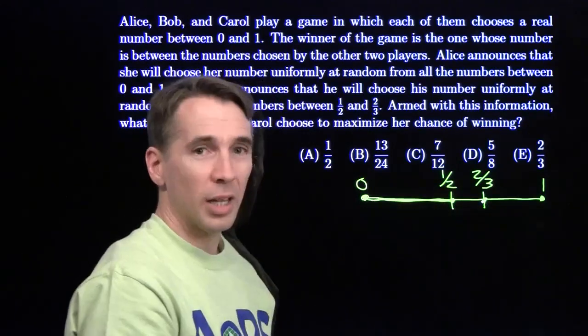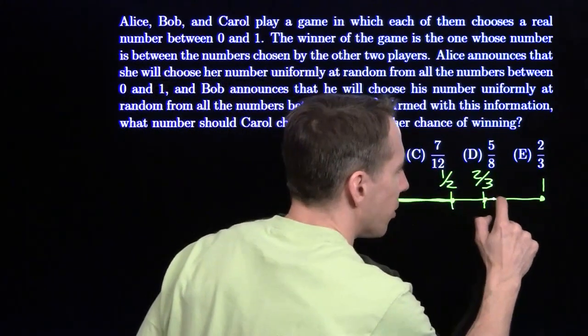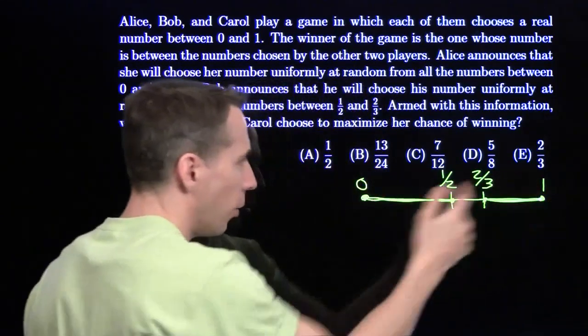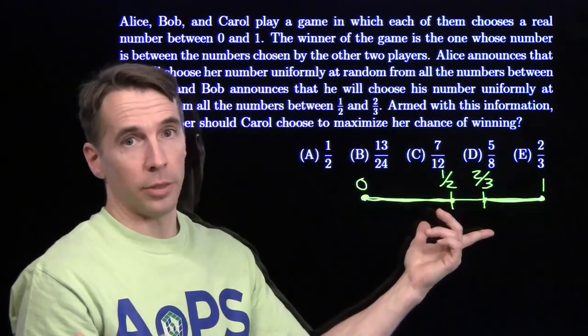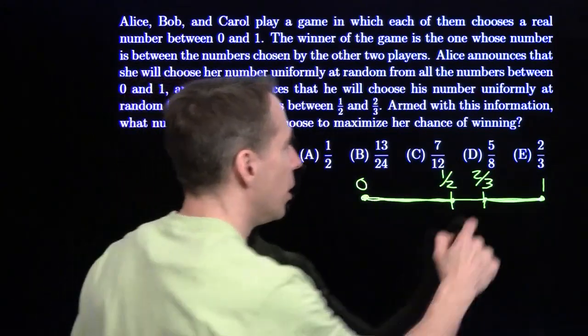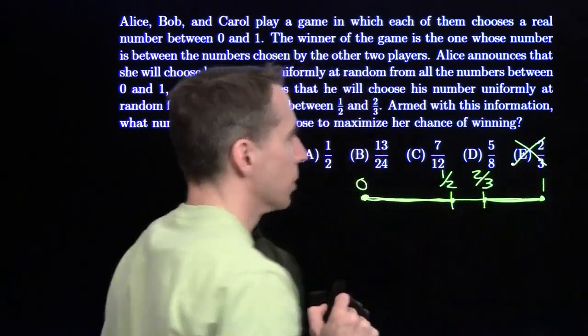Then Bob's always on the left, and Alice ends up on the right 1/3 of the time, the length of this interval out of the whole one she's choosing from. So the probability Carol wins there is just 1/3, which is less than 1/2. Carol should not choose 2/3.